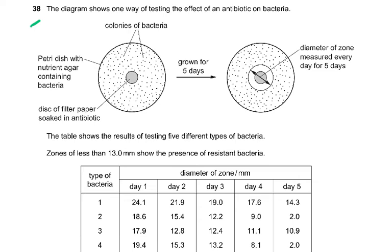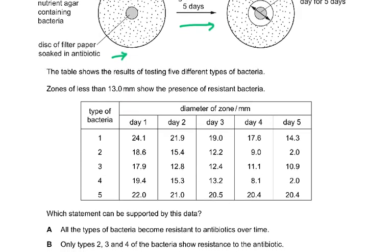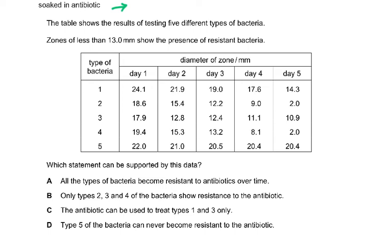Question 38. The diagram shows one way of testing the effect of an antibiotic on bacteria: a petri dish with nutrient agar containing bacteria, a disc of filter paper soaked in antibiotic, grown for five days, and the diameter of the zone measured each day. Zones of less than 13 mm show the presence of resistant bacteria. From the table, less than 13 mm was only types 2, 3, and 4, so only those bacteria show resistance to the antibiotic.